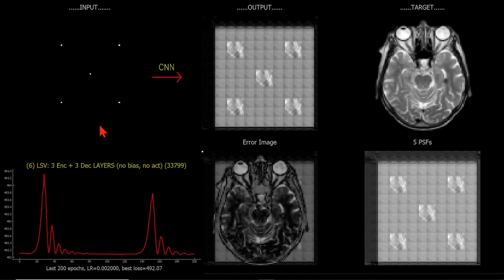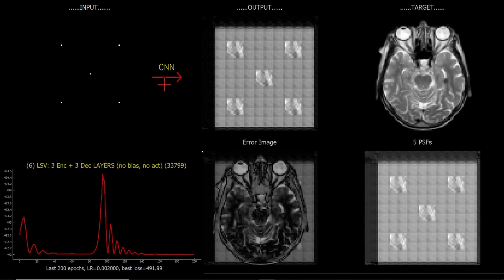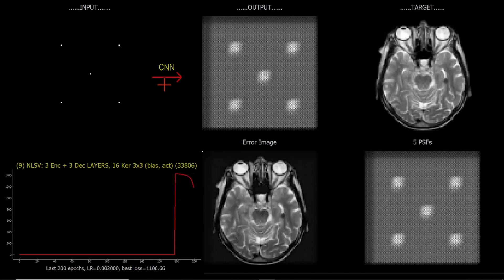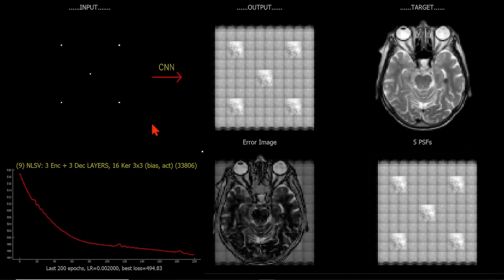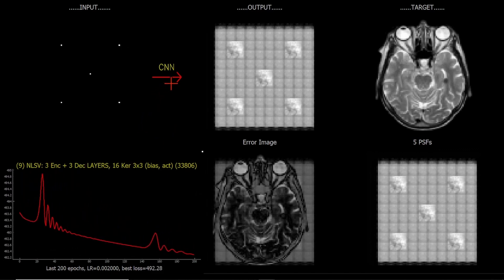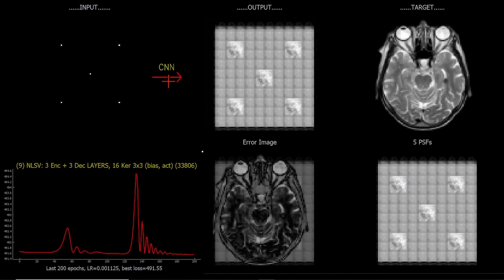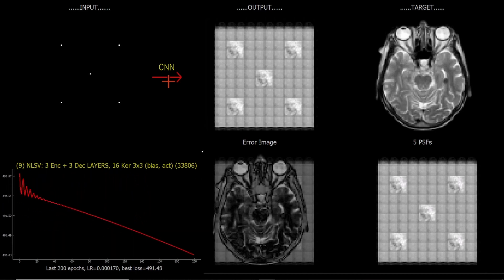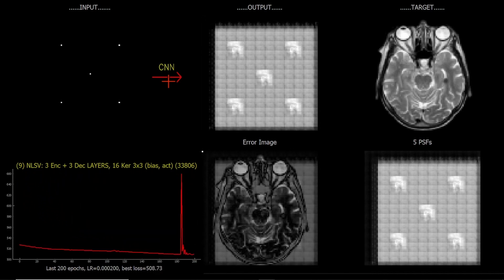It depends on how the downsampling and upsampling is done. Certainly for the case of the linear mapping it's struggling a bit to match the target, so let's introduce some non-linearities. Including the bias and the activation with the same architecture otherwise - we can see that this is also struggling a bit. It may take a while to reduce that loss function. Let me try reducing the learning rate to see if that can help.